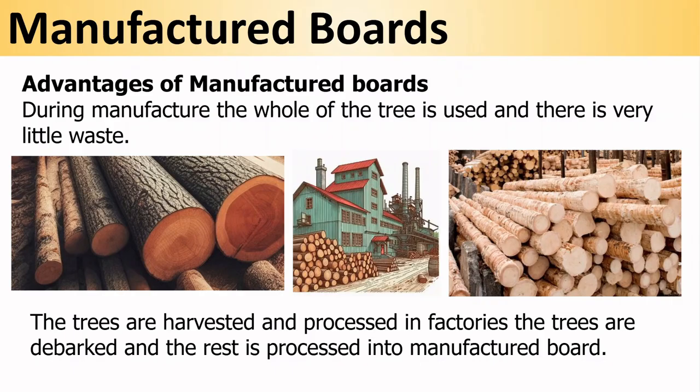During manufacture the whole of the tree is used and there is very little waste. Slightly smaller trees can be used because overall size isn't so important. The trees are harvested and processed in factories — they are debarked and the rest is processed into manufactured board, so the whole tree is used.